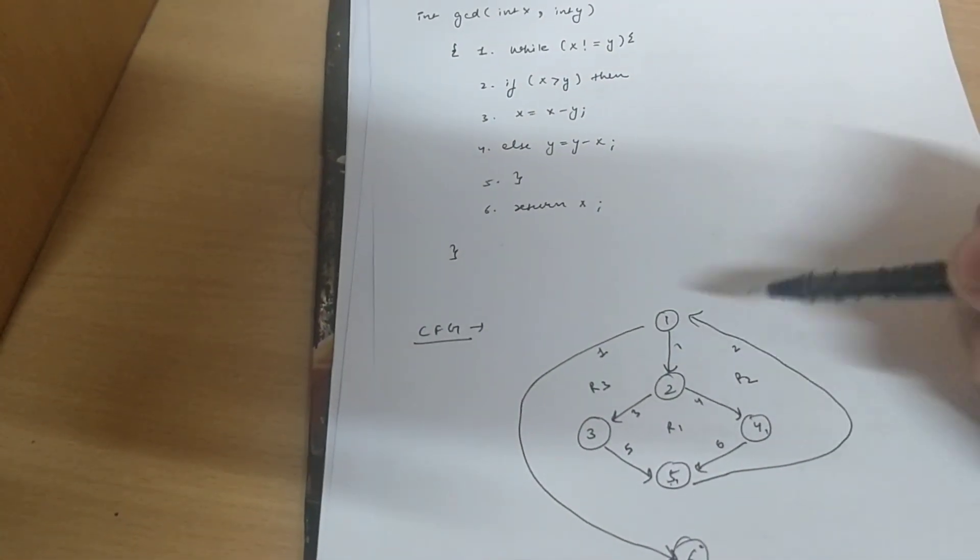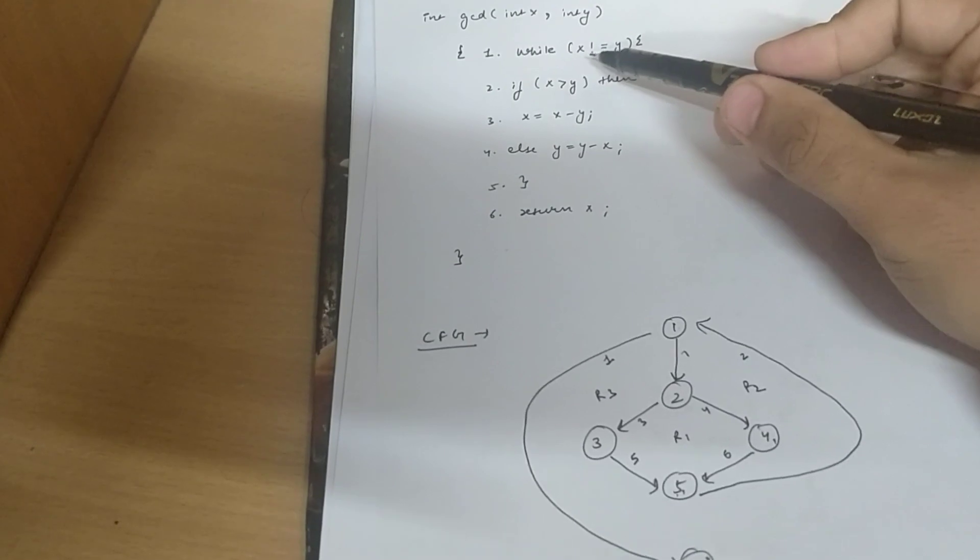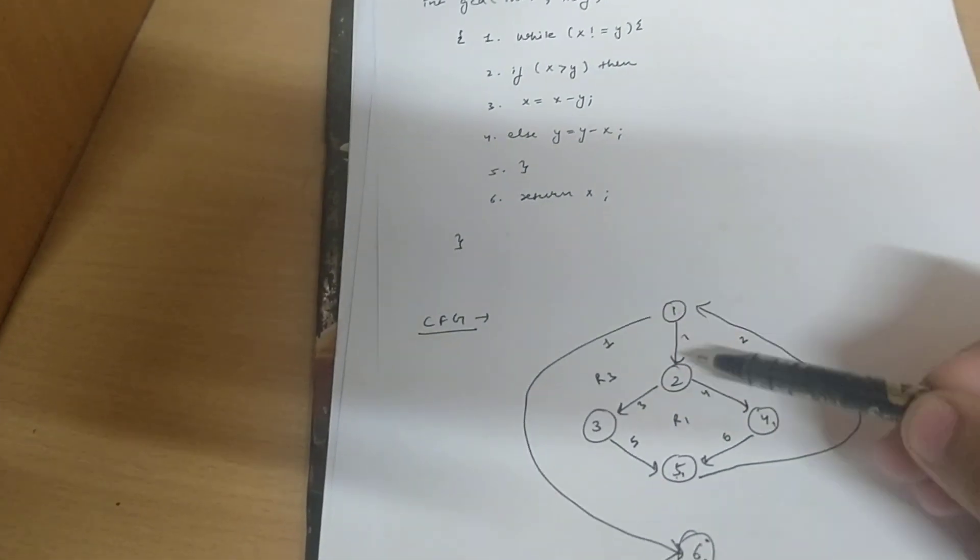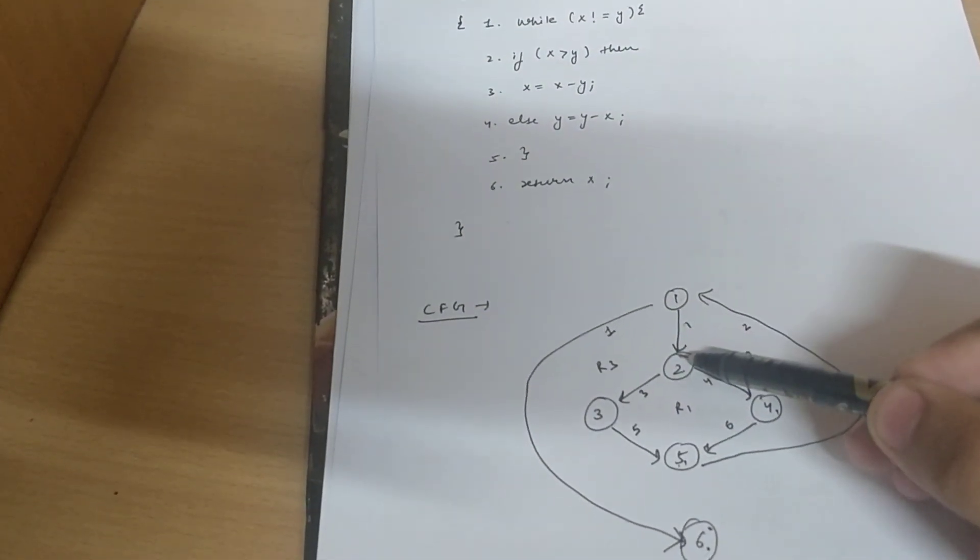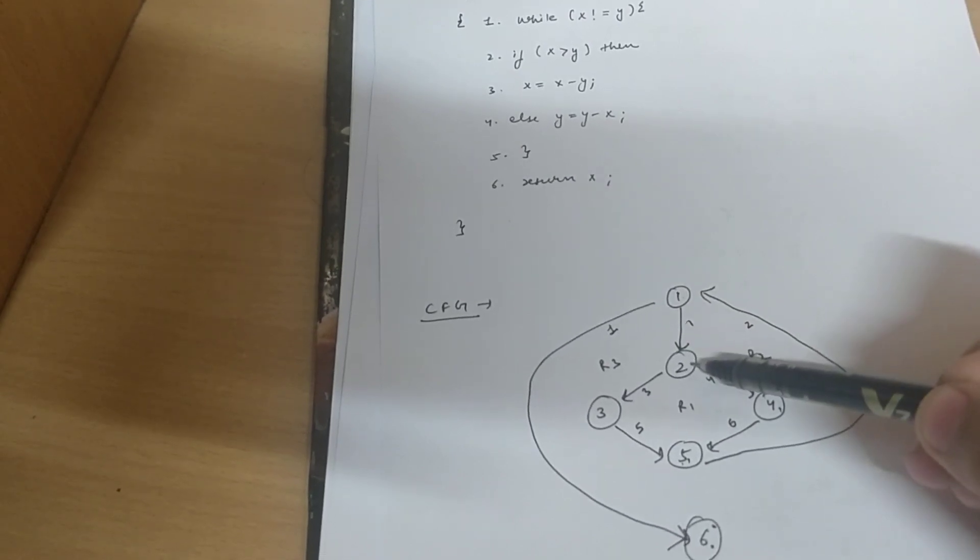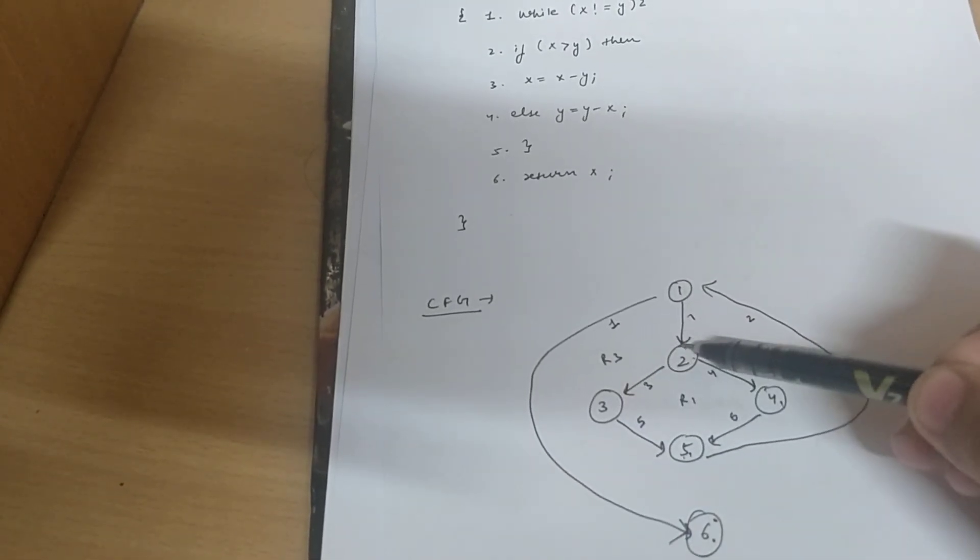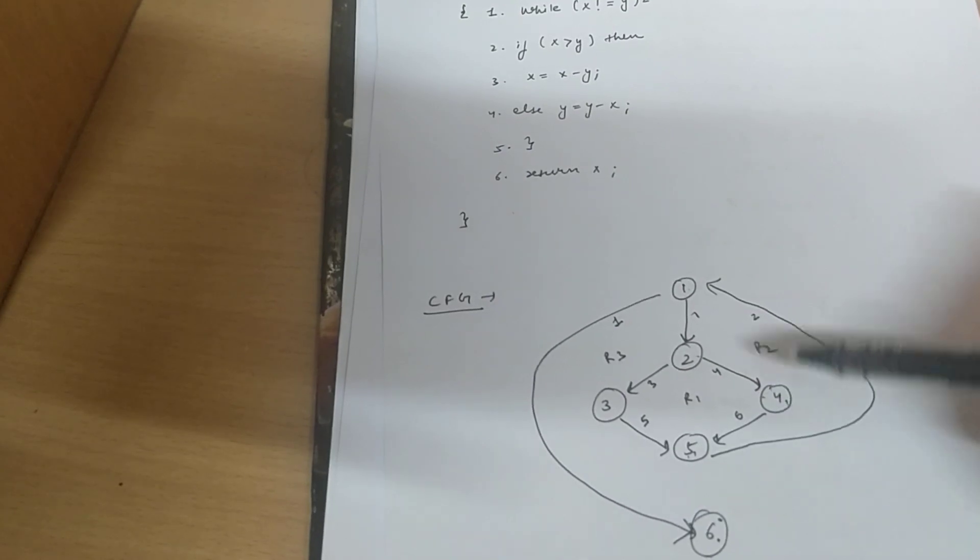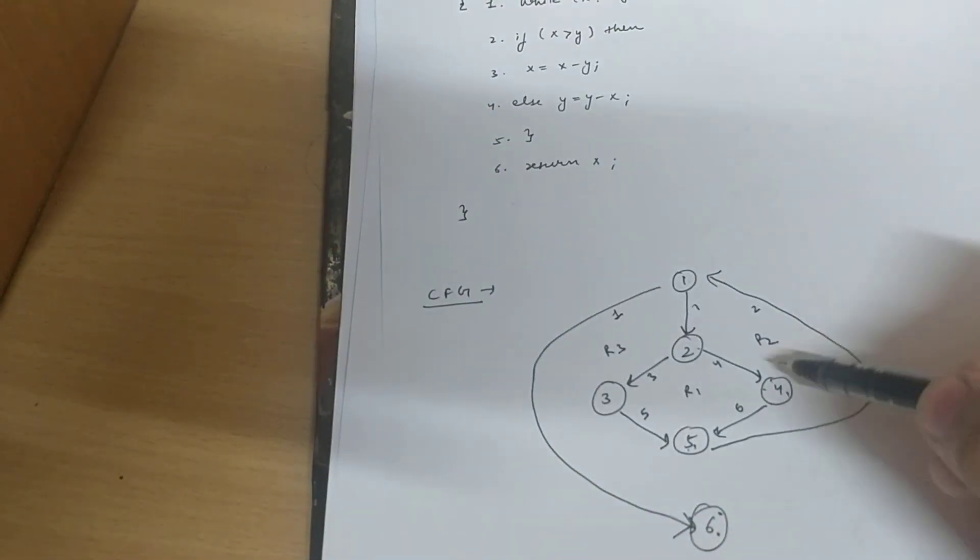While loop starts from 1 here. If the condition in the while loop is true, then it will go to the second step. And if the second condition is also true, it will go to the third step. If it is false, then it will go to the else statement to the fourth step.